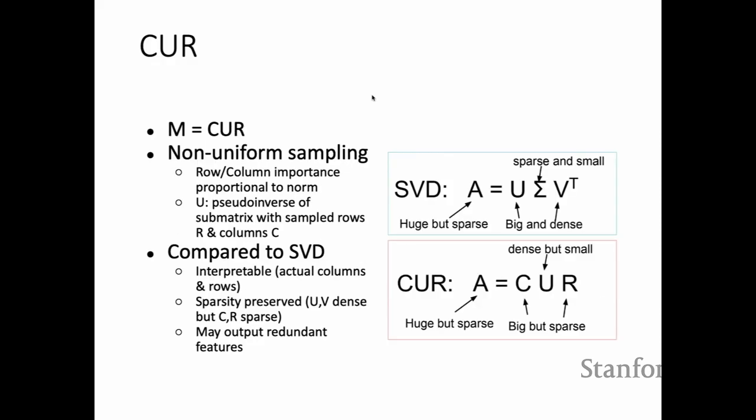CUR is another method for dimensionality reduction. You do non-uniform sampling from the rows of A itself, where row/column importance — the probability fraction by which you sample — is proportional to the norm of those columns. You combine R and C by taking their intersection and computing the pseudo-inverse of that sub-matrix, which becomes U in the CUR decomposition. CUR can be more interpretable because you use actual rows and columns from M rather than abstract singular vectors. Sparsity is preserved: U and V in SVD are dense whereas C and R are sparse. However, CUR might output redundant features.